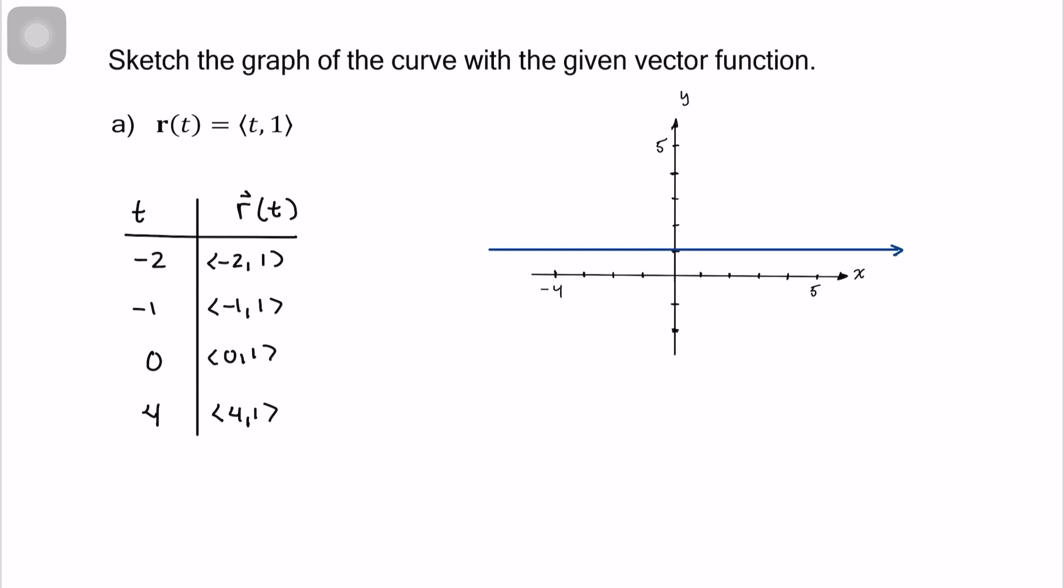And to just make it very clear, let me label some of the t's. What I mean is when t equals negative 2, our vector is negative 2, 1. So that's the vector negative 2 comma 1. And it's pointing in that direction. And this point here, that is the value of our vector-valued function. The ordered pair negative 2, 1.